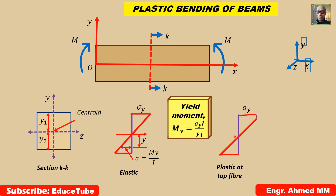With a further increase of moment, yield stress will now reach the bottom fiber as well. So there is a plastic zone at the top, a plastic zone at the bottom, and in between these two zones this part is the elastic zone.